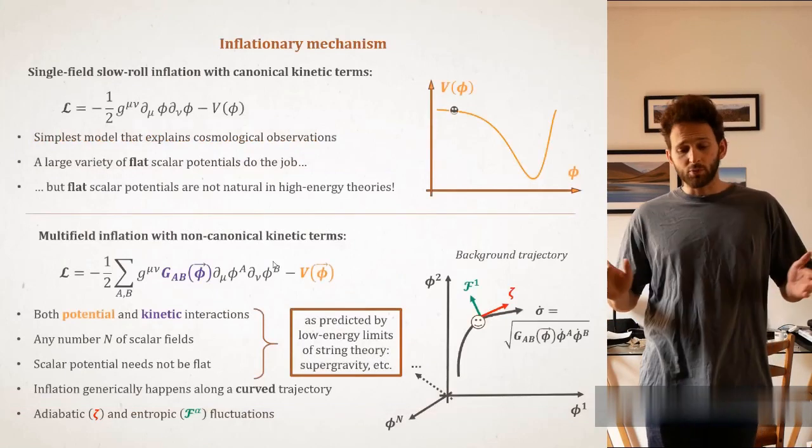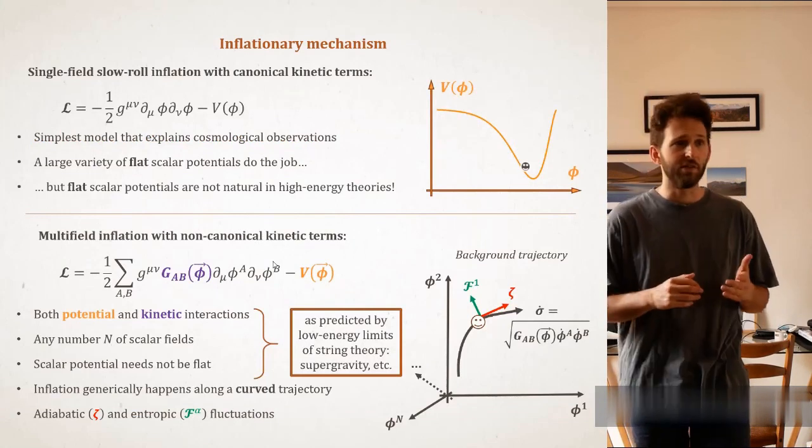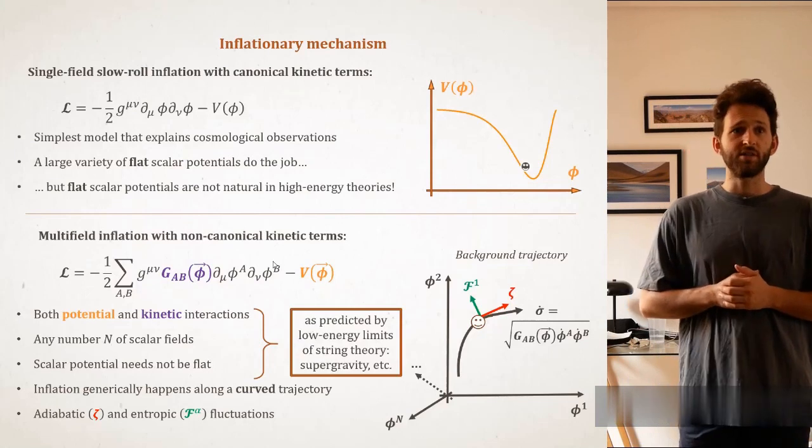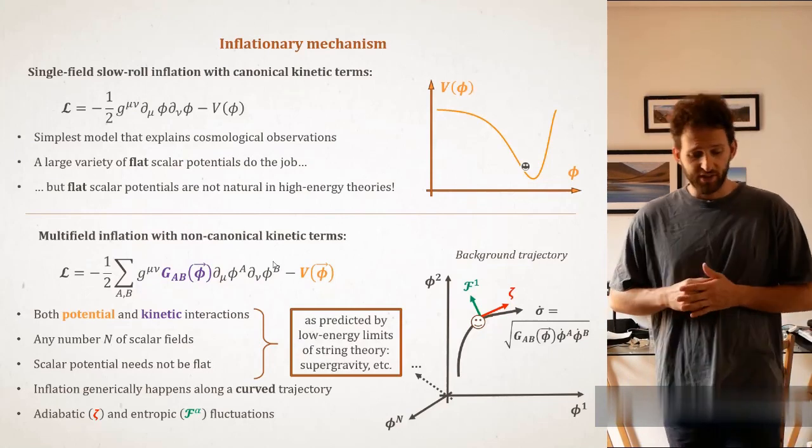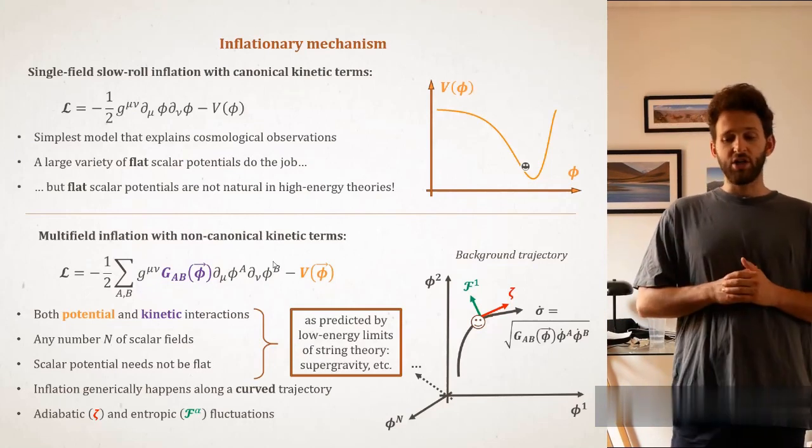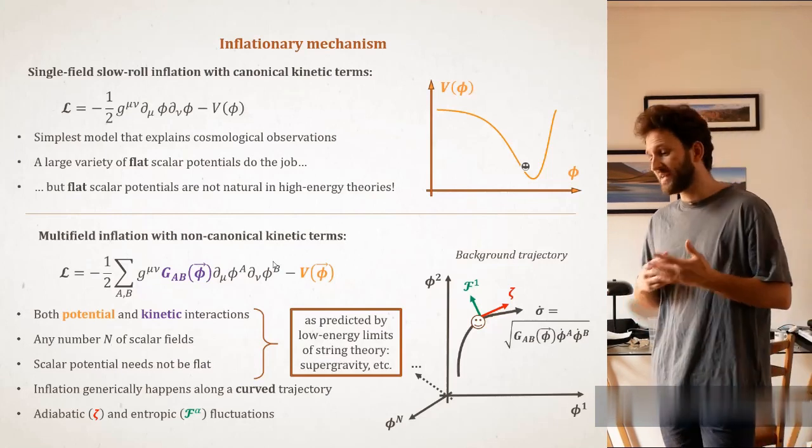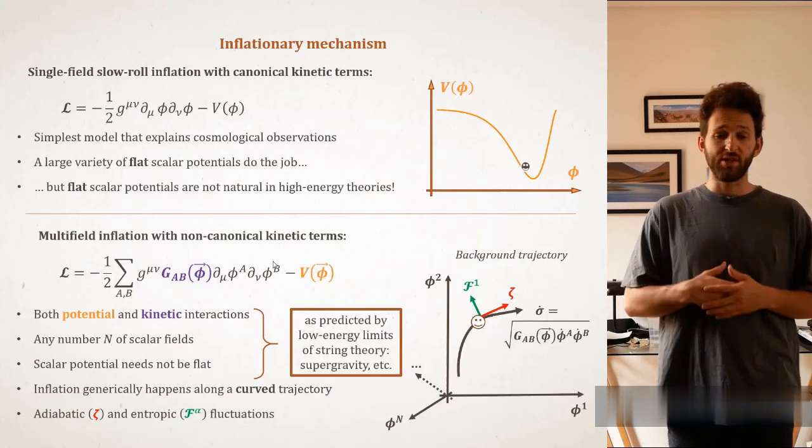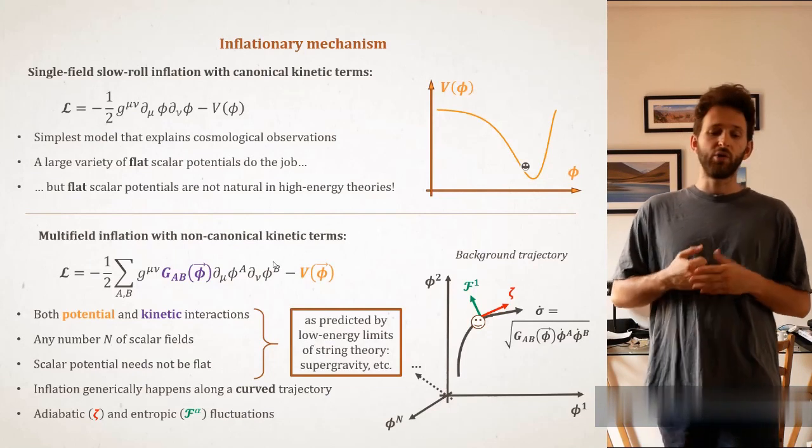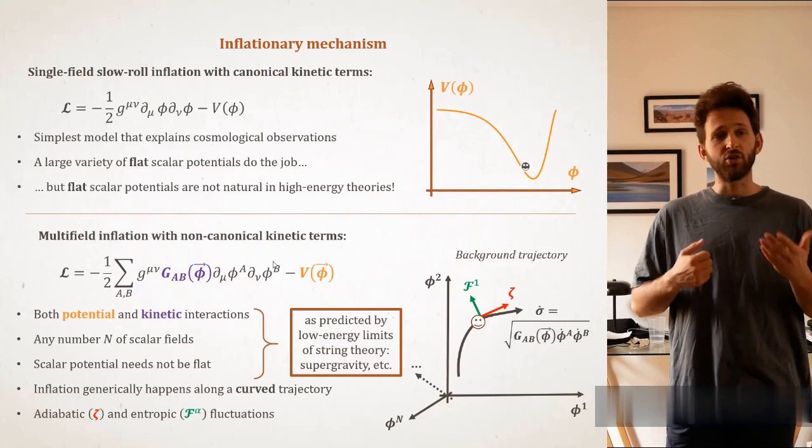What's the mechanism behind inflation? Before going to multifield inflation, let me remind you that single-field inflation, which is the simplest model that accommodates for all the cosmological observations to date, was very successful. Indeed, a large variety of flat scalar potentials enables to explain both the homogeneity on the very large scales of the CMB, but also the statistics of its anisotropies. But actually, flat scalar potentials, such as the ones needed for slow roll, are not usually found in concrete low-energy realizations of high-energy physics. Said otherwise, we say that they are not natural.